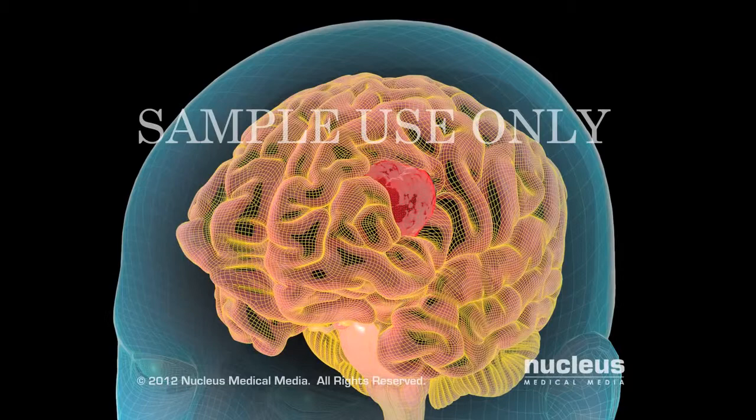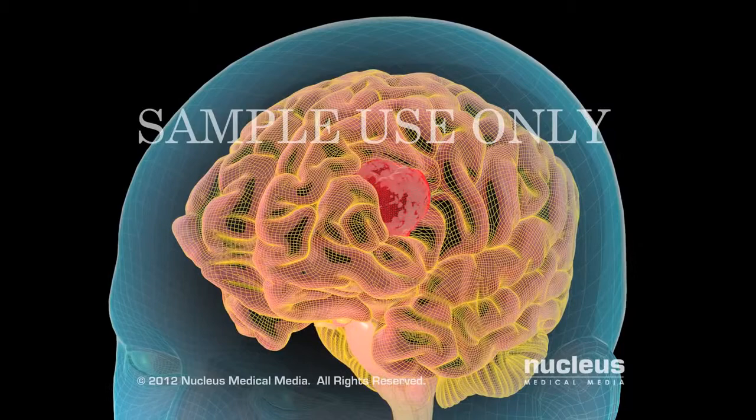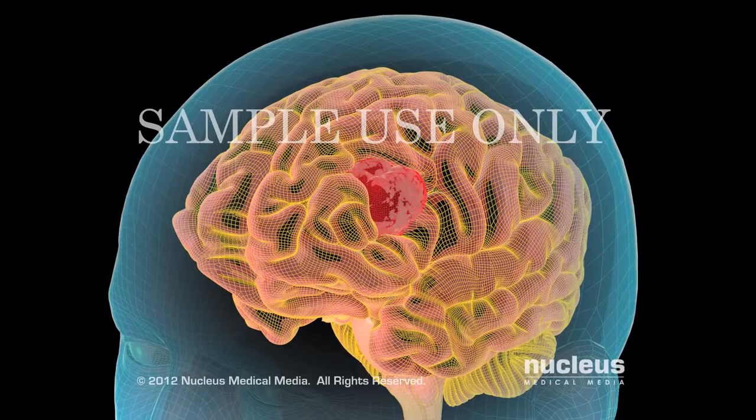The tumor's shape, size, type, and location help your doctor determine how the IMRT beam should be adjusted to hit your tumor and avoid healthy tissue.